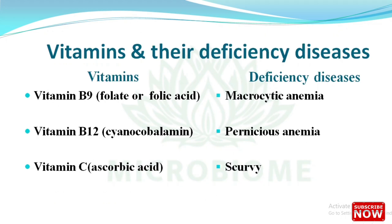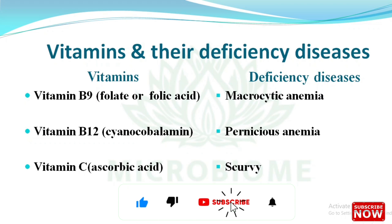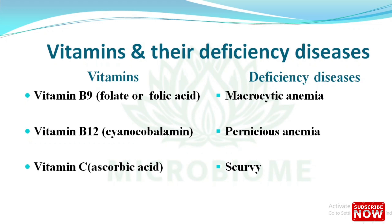Vitamin B9, folate or folic acid — deficiency disease is macrocytic anemia. Vitamin B12, cyanocobalamin — deficiency disease is pernicious anemia. Vitamin C, ascorbic acid — its deficiency causes scurvy.